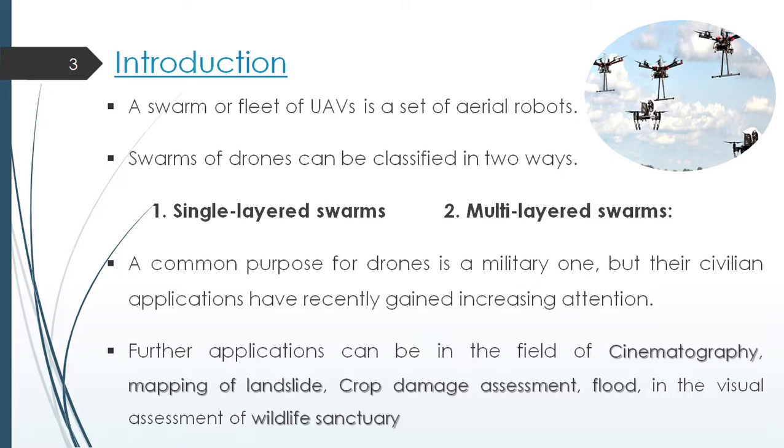So let's start off with introduction. A swarm is a large group of an entity that works in collectiveness. So a swarm of UAVs is a set of aerial robots that work collectively to achieve a singular goal. In terms of functioning, a swarm of UAVs is classified in two ways: single-layered and multi-layered swarms. In single-layered architecture, each drone acts as an individual entity whereas in multi-layered architecture there are two or more than two layers of control.